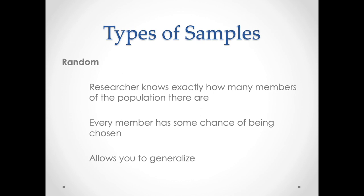Often in the United States, we're interested in racial dynamics among samples that we construct. For certain groups like African Americans or Native Americans, we may construct an over-sample — we assign a higher probability of selection for African Americans or Native Americans so that there are more people we gather information about from those racial and ethnic groups as compared to whites.